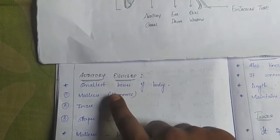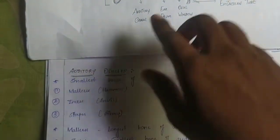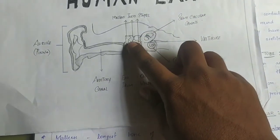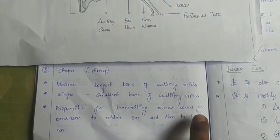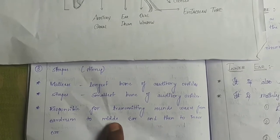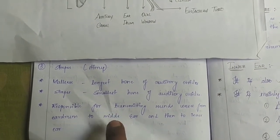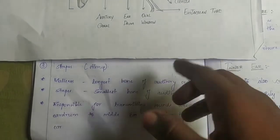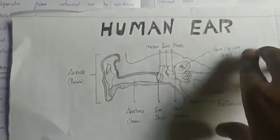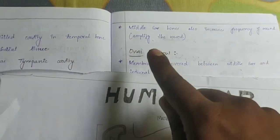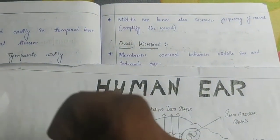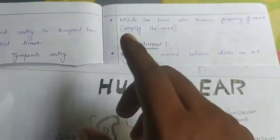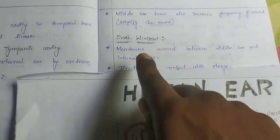Let's look at the details. The auditory ossicles are the smallest bones of the body, present in the ear. They are the malleus, incus, and stapes. They are responsible for transmitting sound waves from the ear drum to the middle ear and then to the inner ear. The middle ear bones also increase the frequency of the sound.